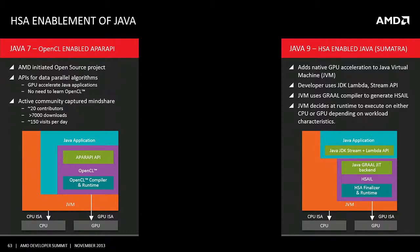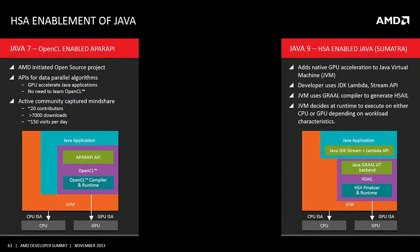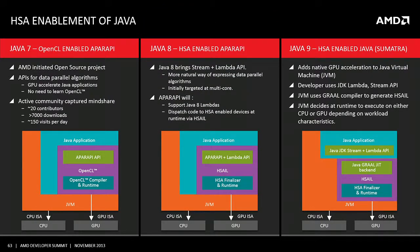HSA enablement of Java is very important given the predominance of Java in server and cloud programming. We've talked previously about Java 7 and enabling OpenCL applications through the Apparapi library, and about Project Sumatra aiming to bring GPU and HSA acceleration into the Java virtual machine in Java 9. We will provide an HSA-enabled Apparapi on Java 8 running off Lambda and Stream APIs provided by Oracle, filling the gap and giving a path to acceleration on Java 8 while we wait for the JVM to complete the journey in Java 9.